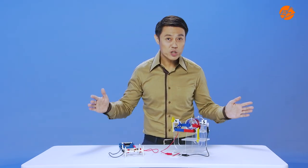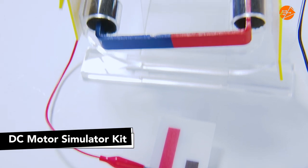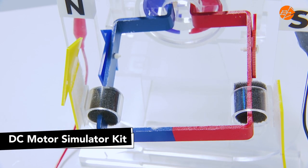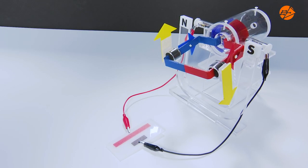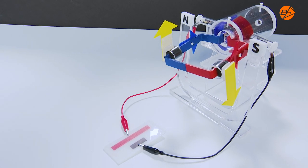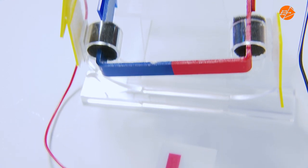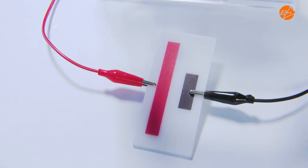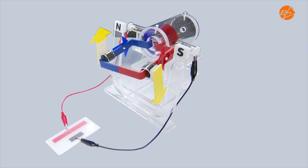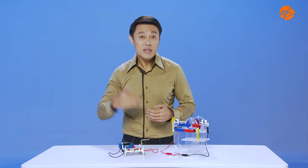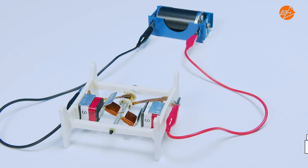For my demonstration, we will refer to this simulator kit of a single-coil DC motor. In real life, note that a single-coil DC motor will not produce enough magnetic force for the coil to spin. A DC motor has various components such as a split ring, carbon brushes, coil, permanent magnets and batteries. Now, let's take a look at this setup of a simplified DC motor.